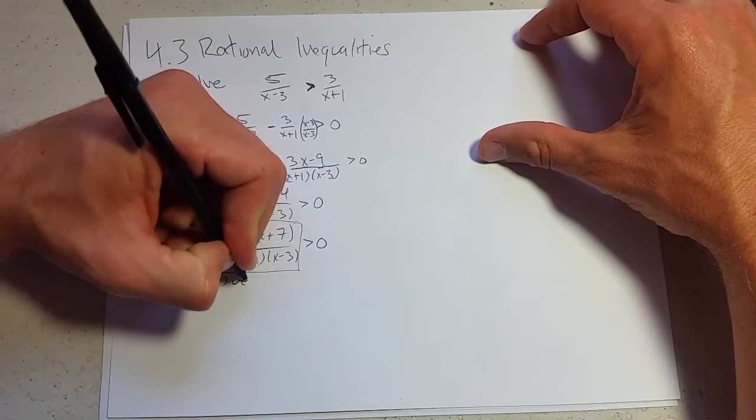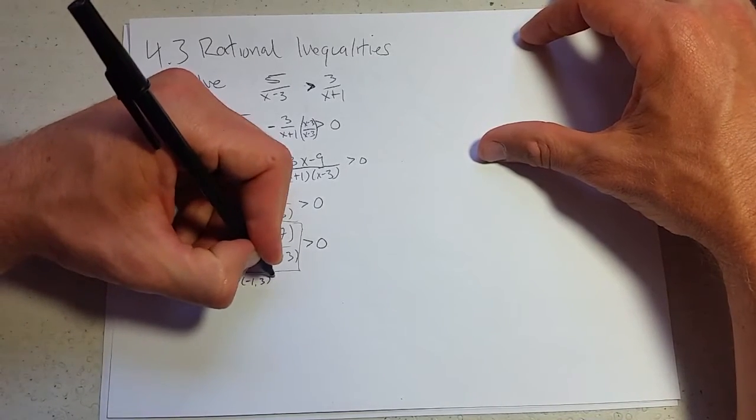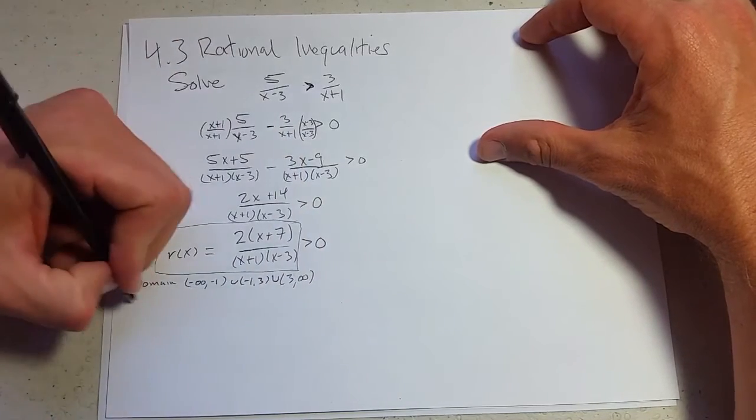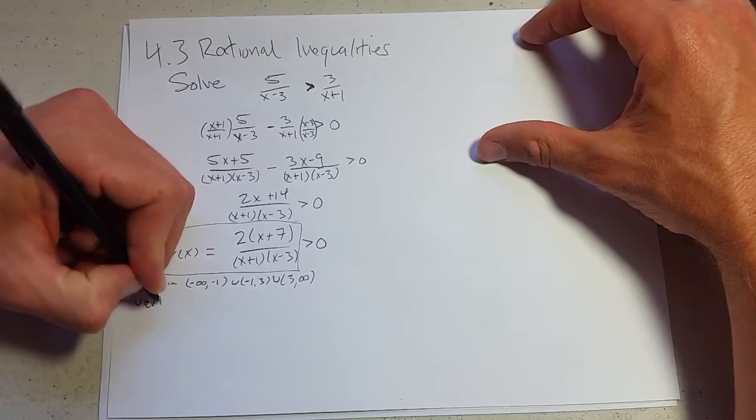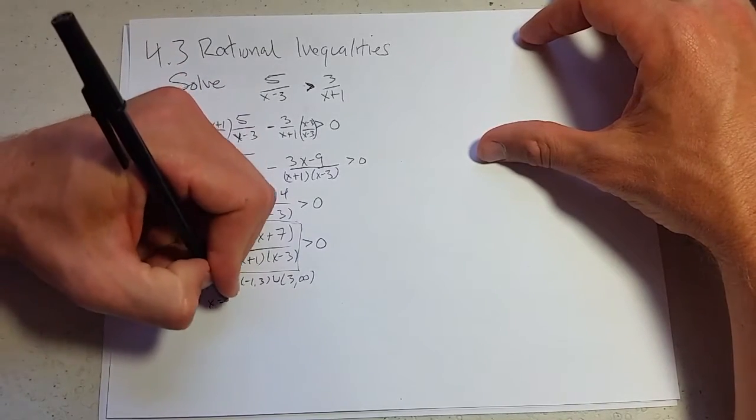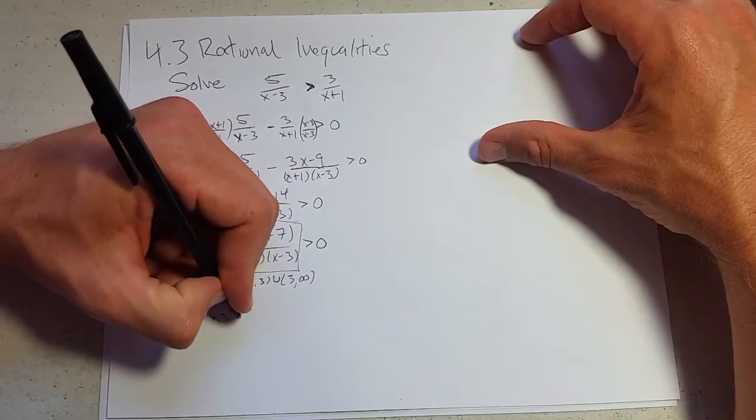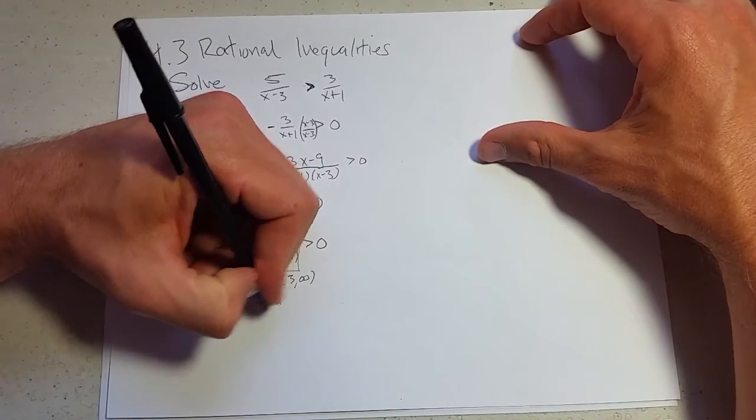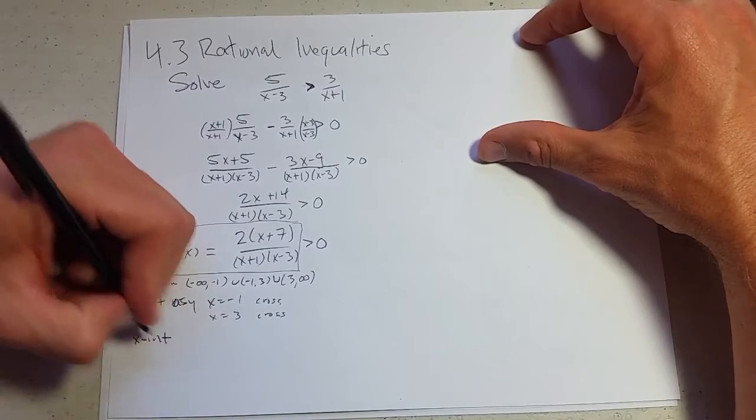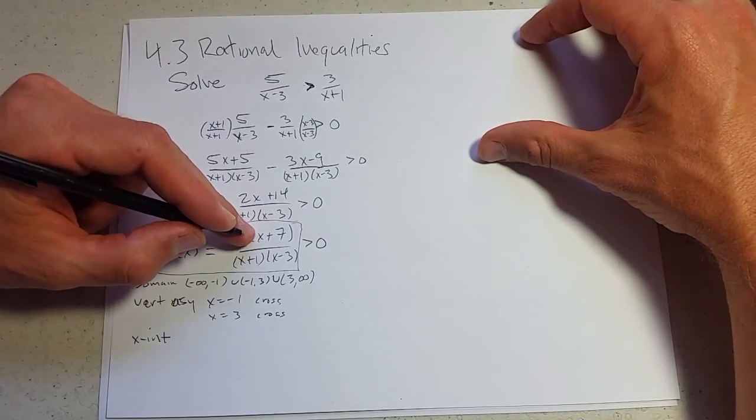Negative infinity, comma, negative 1, union, negative 1, positive 3, union, 3, infinity. All right, we'll go vertical asymptotes next. x equals negative 1, x equals 3. They're both cross.